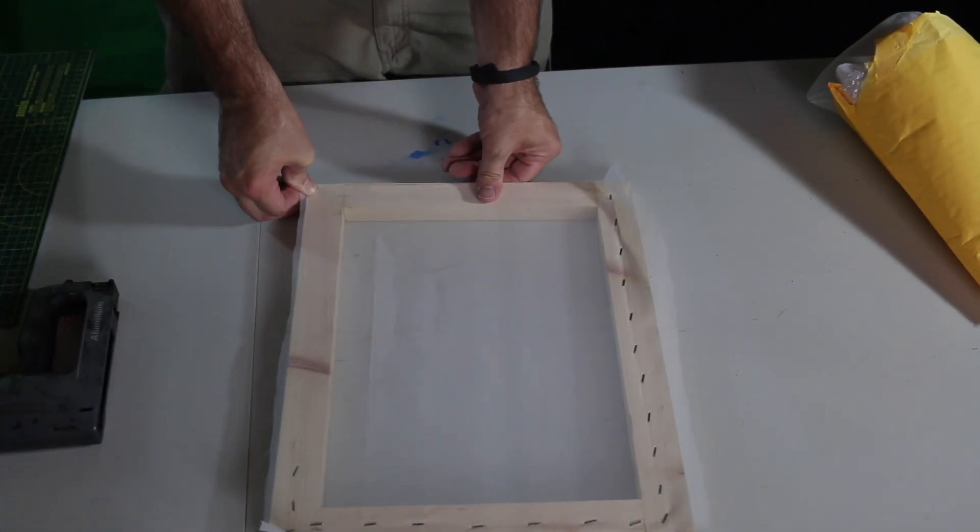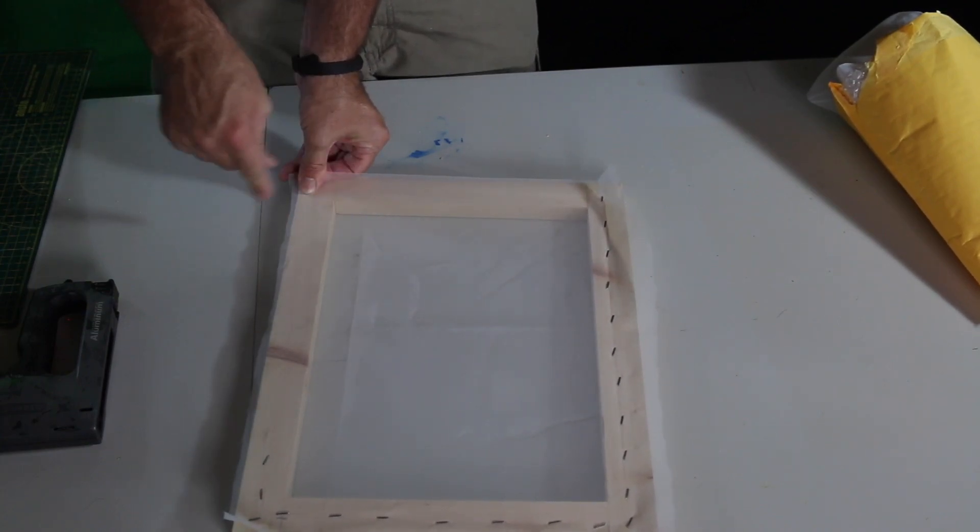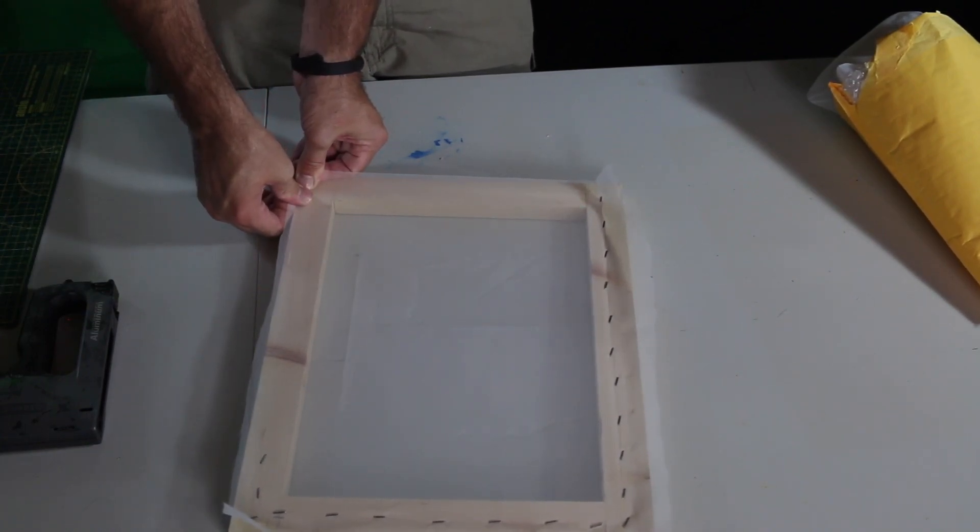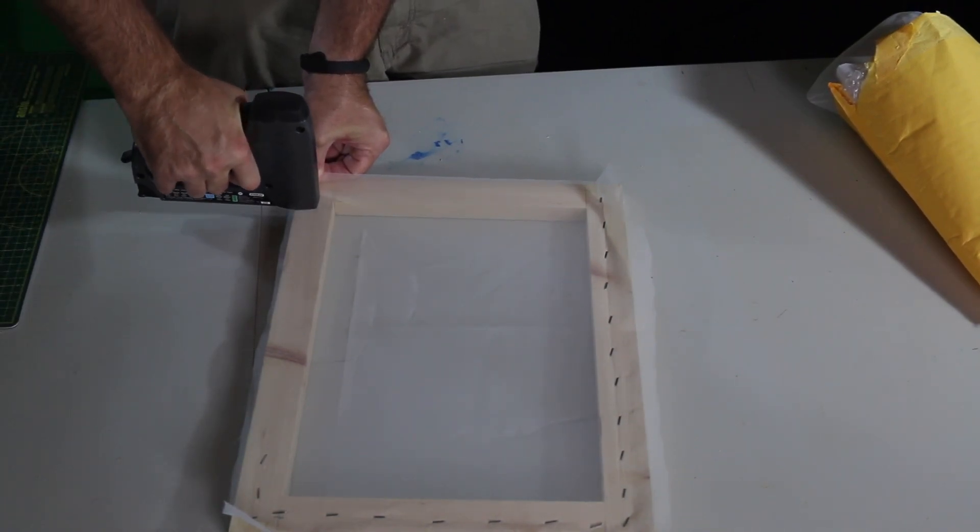Now the bottom piece you really want to pull snugly but you want to make sure you don't pull so much that you rip the screen out of the staples. But pull it tight and staple along that side.